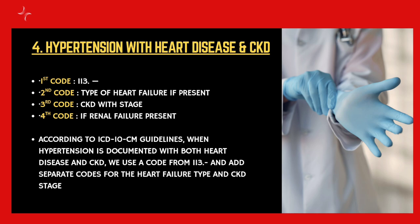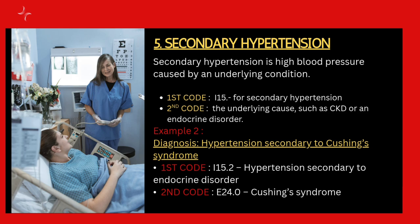Next is hypertension with heart disease and CKD. The combination primary code will be I13. The second code should be for the type of heart failure if it is present, the third code for CKD with stage, and the fourth code for renal failure if it is present.